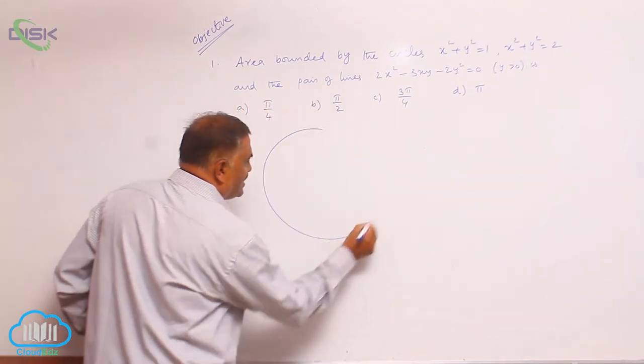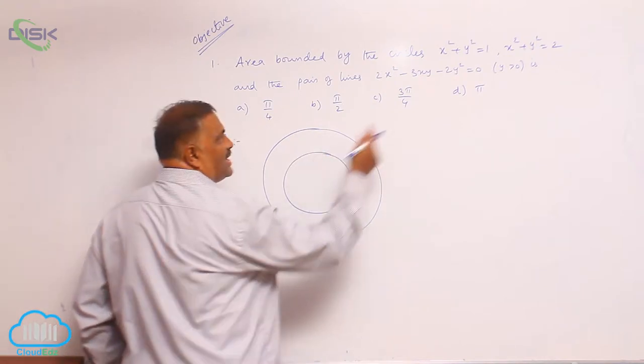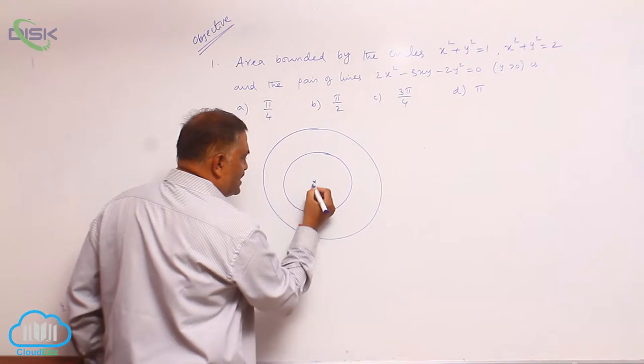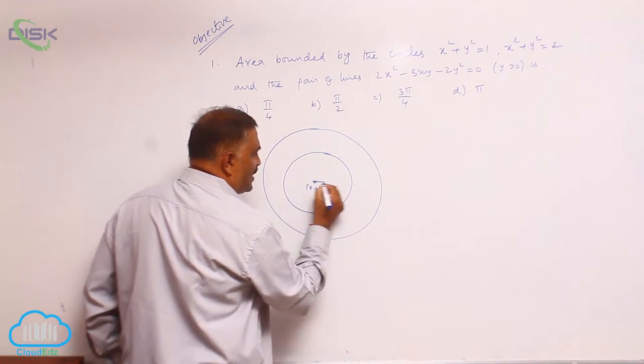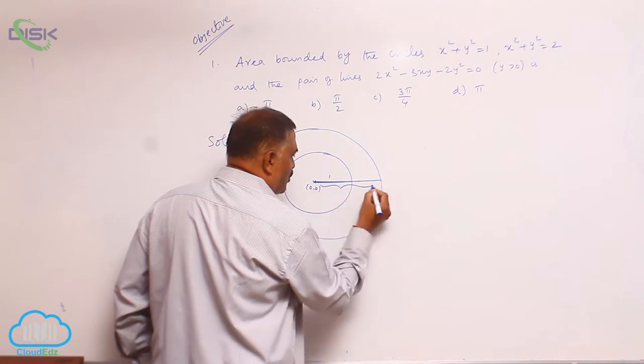You can see very clearly that this is circle number 1, this is one more circle. Because of this, the radii - this one is 1 and this one is having totally root 2.